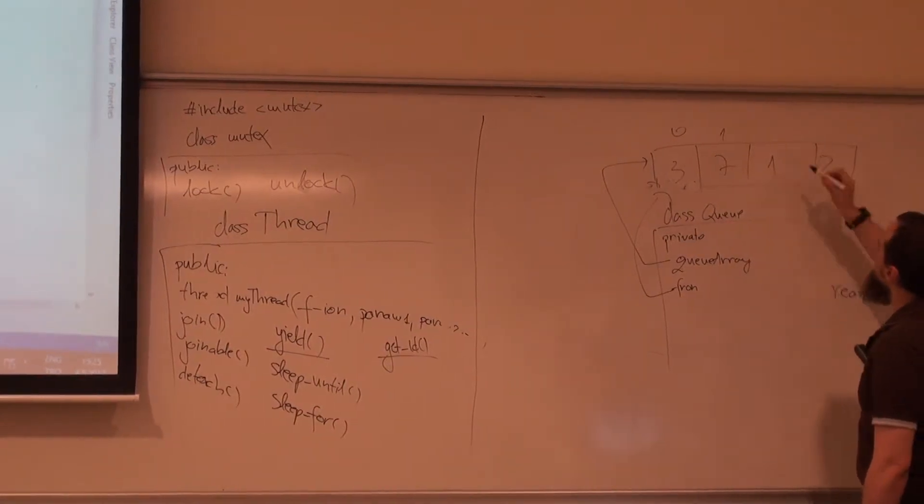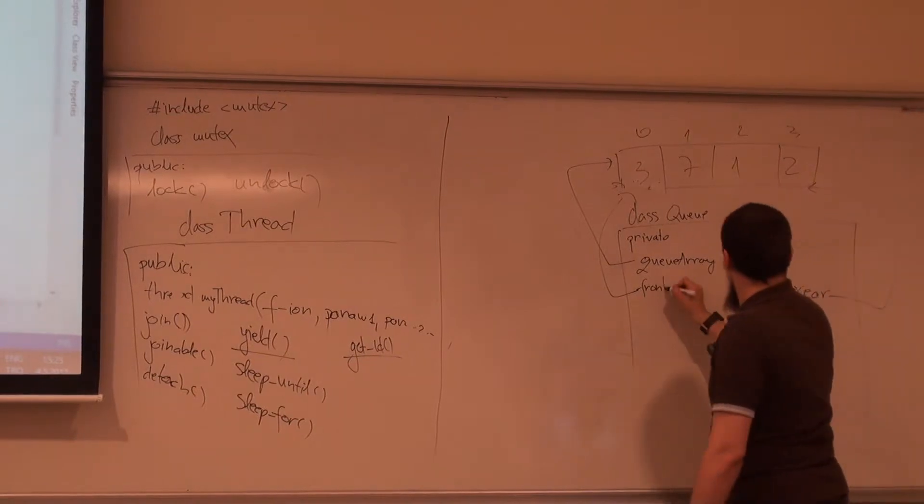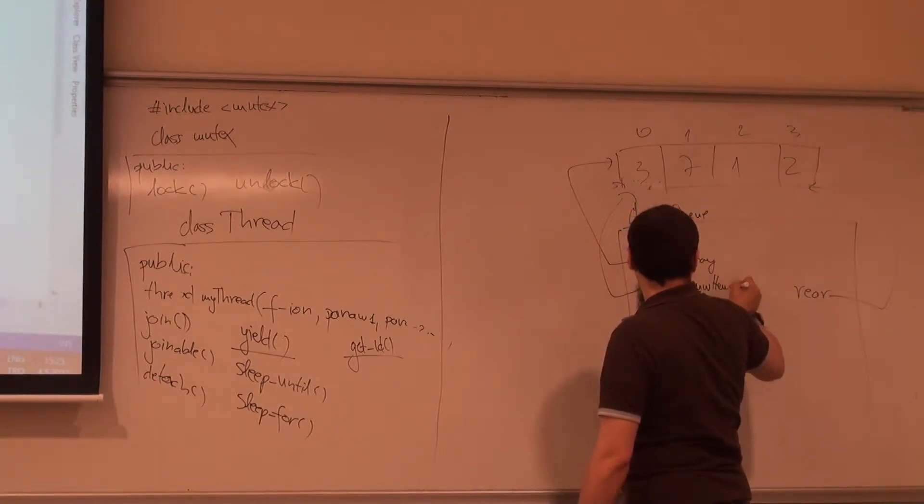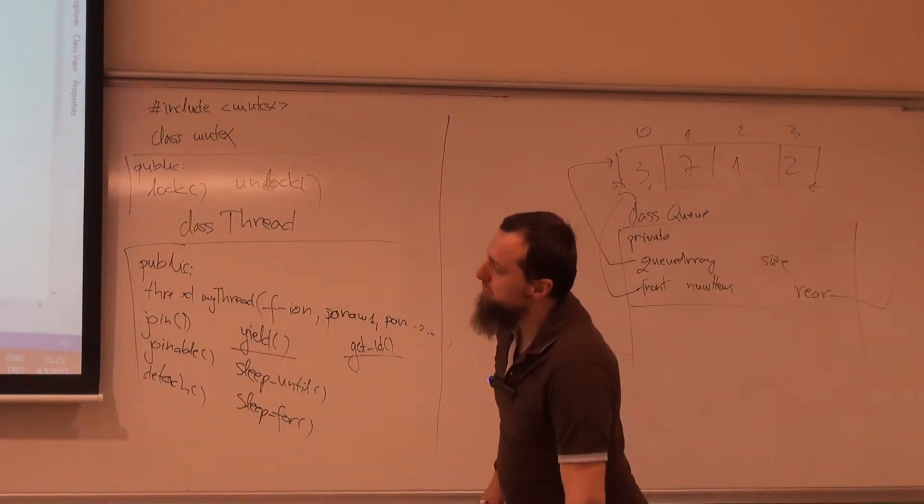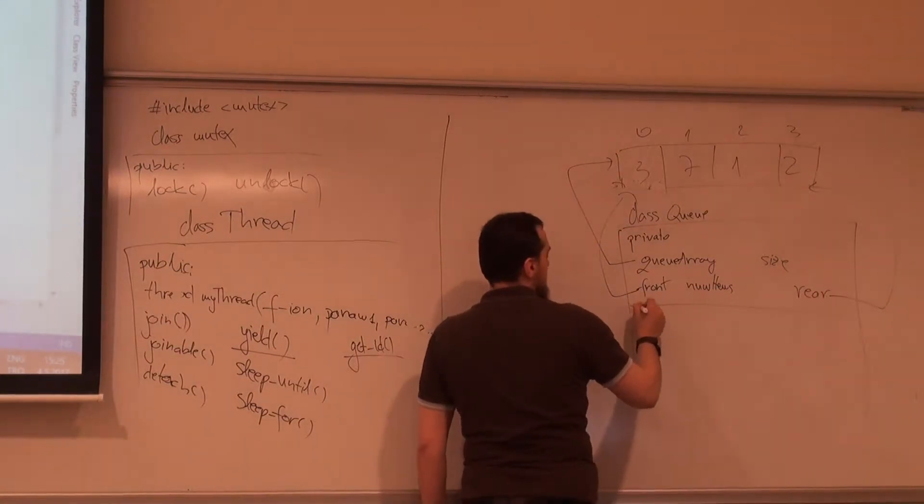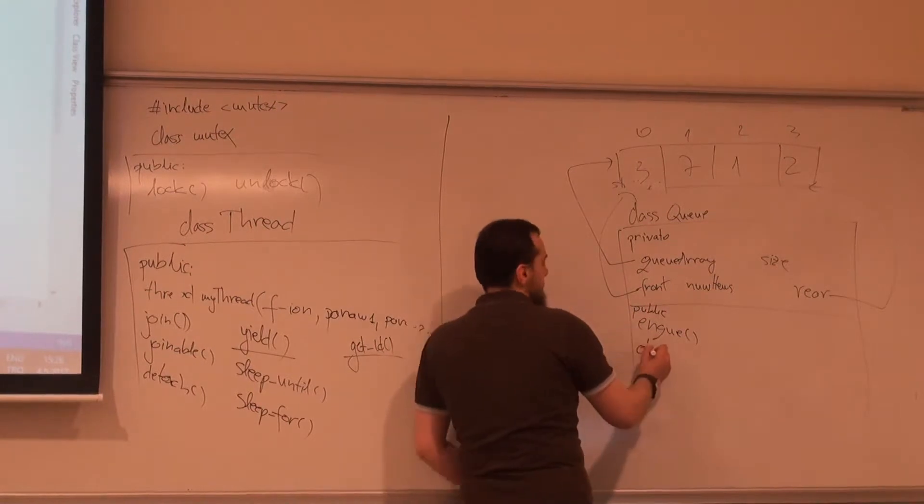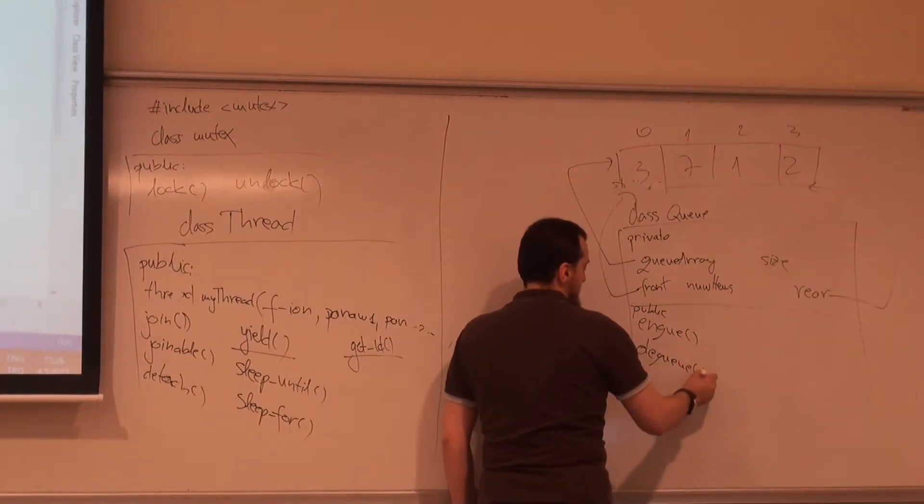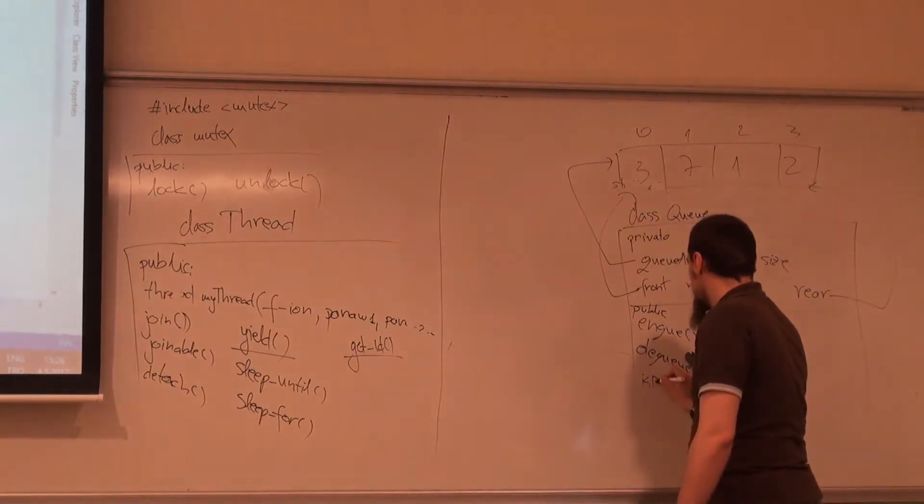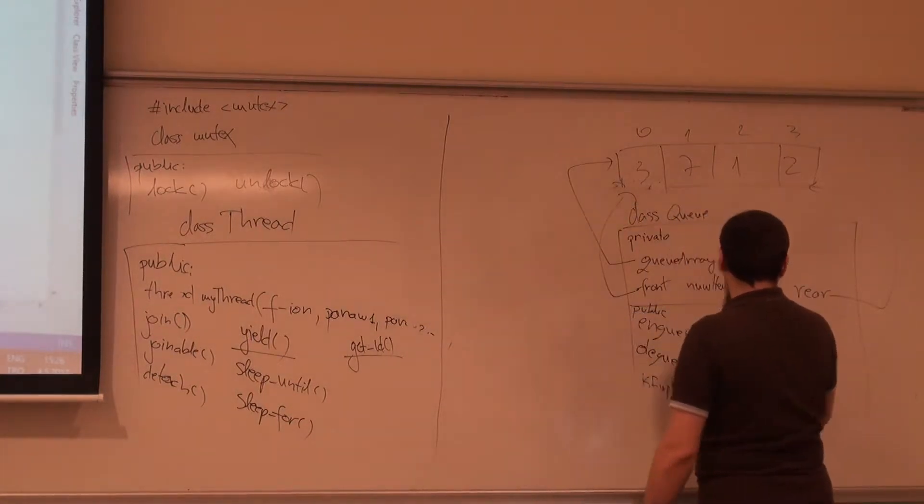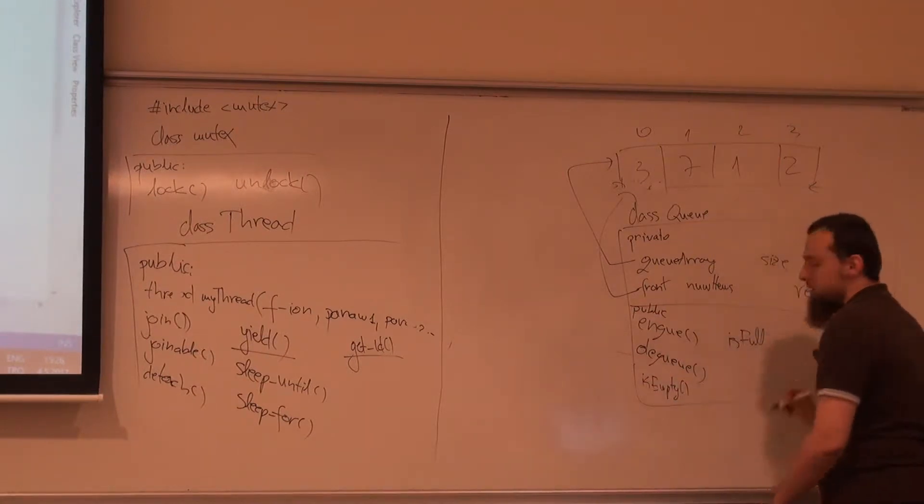When the queue is not empty, we have three, seven, one, two. Those are the indices. Number of items, which is the number of items I currently have. There is the size also on integer, the maximum number of items I can have. We have the most important part for the queues here, the public parts. Public members are enqueue. We know what it's doing, it's putting an element at the rear. Dequeue is taking from the front.